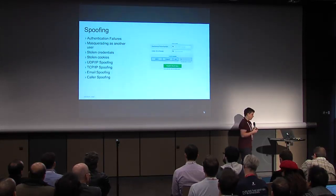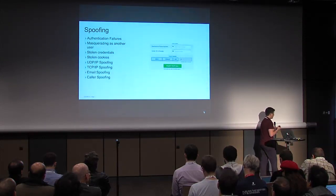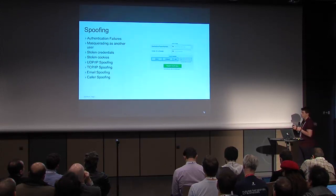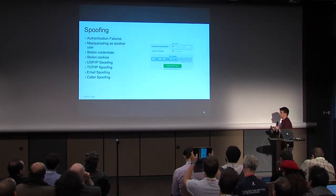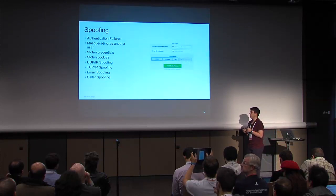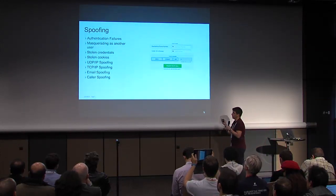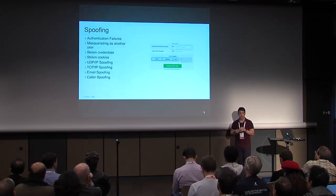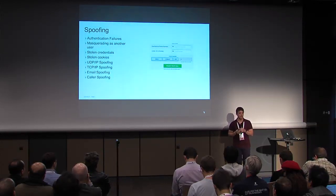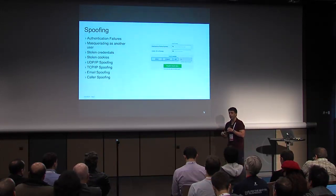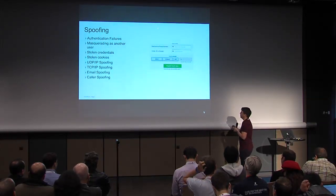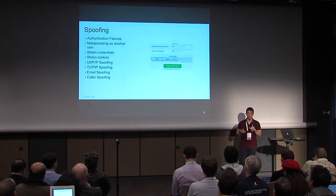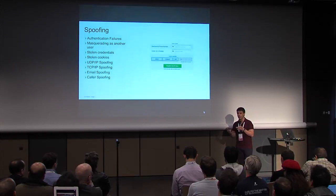Spoofing: can an identity be changed, stolen, or masqueraded? A good example is a phone dialer where if you have a telephone number for a celebrity, you can dial into their voicemail, because they use the telephone number dialing in as authentication, and it turns out to be trivial to spoof. These are the sorts of things we need to think about when designing all systems, not just OpenStack — everything that you're going to build.